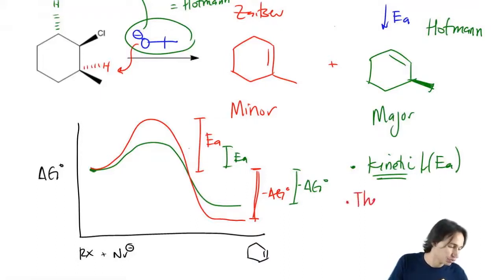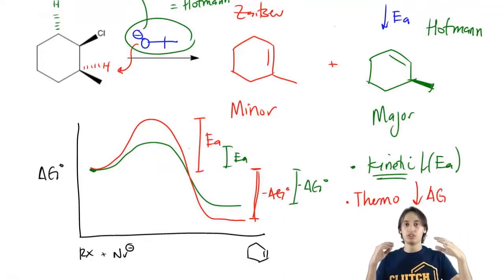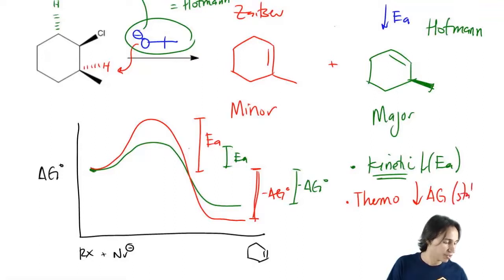Whereas thermodynamic control is the one that looks at the overall lowest delta G. The one that gets the most free energy at the end, that's the most stable at the end. That's going to be the one that I favor.